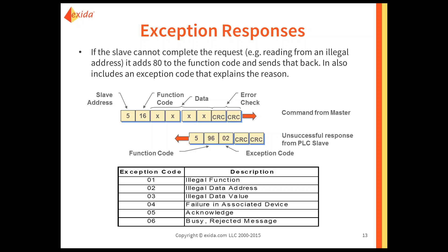If a request is made that can't be done by the slave — for example, the PLC only has 100 registers and you try to read register 101 — the slave still responds, but it responds with an exception code. We're sending slave address 5, function code 16, and saying read register 1001. Well, my PLC conceptually only has 1,000 registers, so my PLC is going to respond with its slave address, send back the requested function code incremented by 0x80 — making the response code 0x96 — indicating an error. It also gives the exception code explaining why the command was rejected. In this case, an illegal data address: I don't have the address you asked me to read.